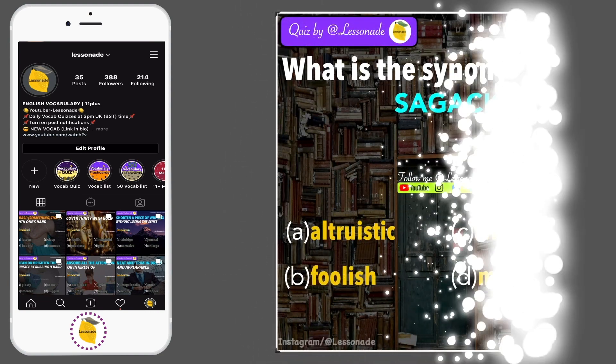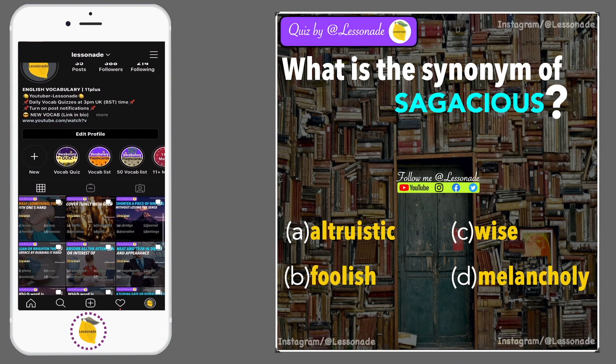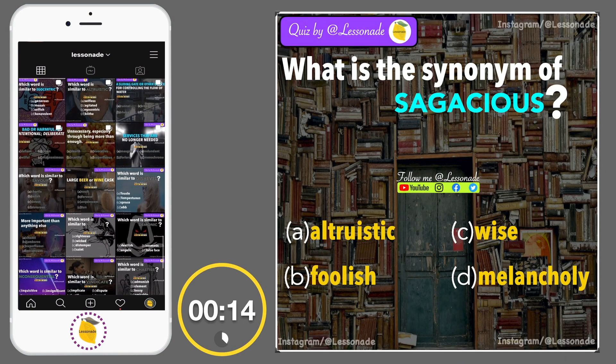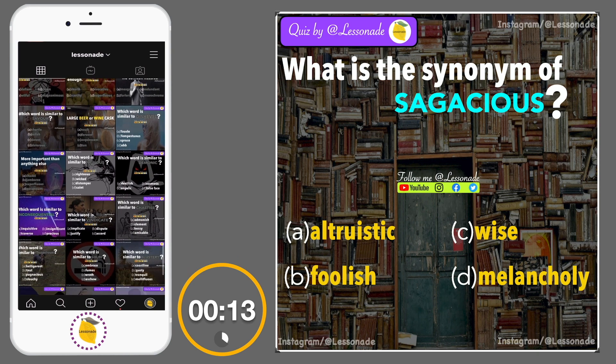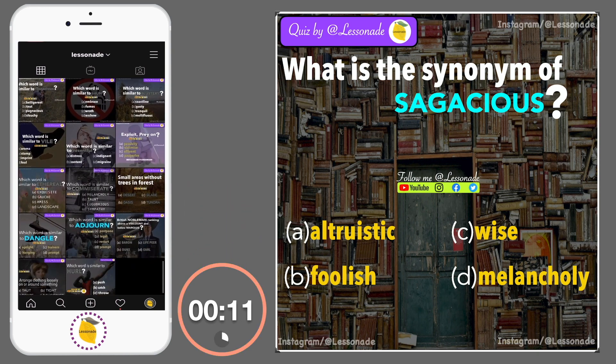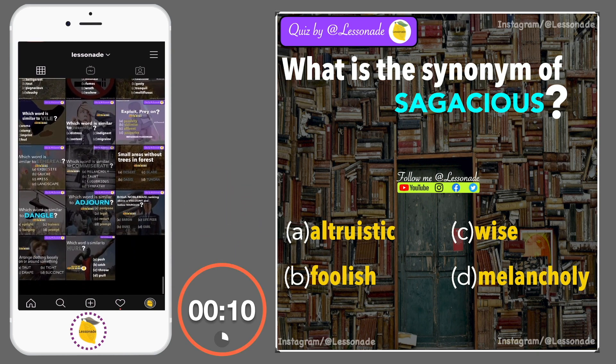What is the synonym of sagacious? Options are: A, Altruistic; B, Foolish; C, Wise; and D, Melancholy.